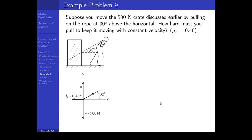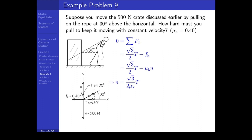The only force to resolve into components is the tension force: T cosine 30 degrees horizontally and T sine 30 degrees vertically. We now have two upward forces, one downward force, one rightward force, and one leftward force. Applying Newton's laws: in the x direction, T cosine 30 minus F sub k equals zero. F sub k equals mu k times N, so we can express N in terms of T. The cosine of 30 degrees is root 3 over 2.